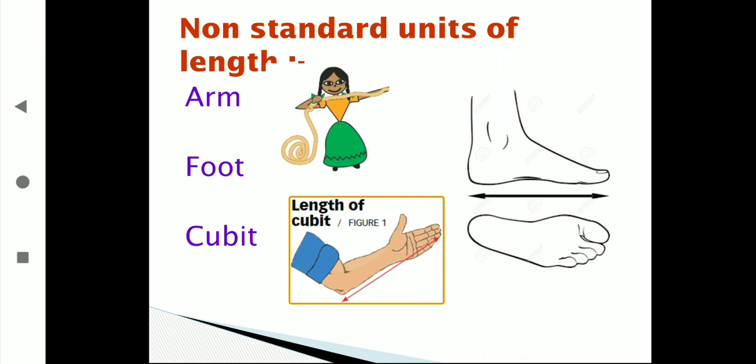Normally, people used their body parts to measure the length of objects. But the problem was, person to person, the length is different. When a small child measures, they get a bigger number, but an elder person gets a smaller number. So the length differs from person to person using non-standard units. Afterwards, they started using a scale.